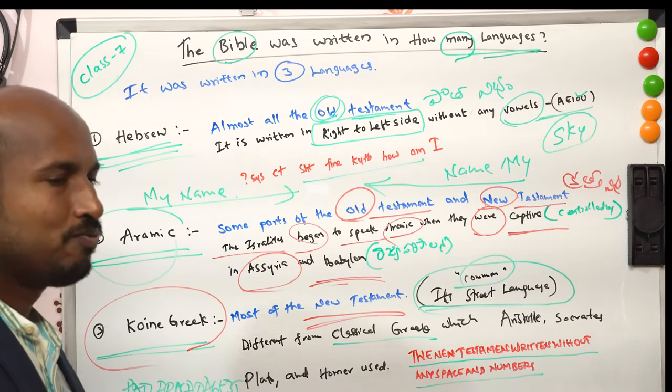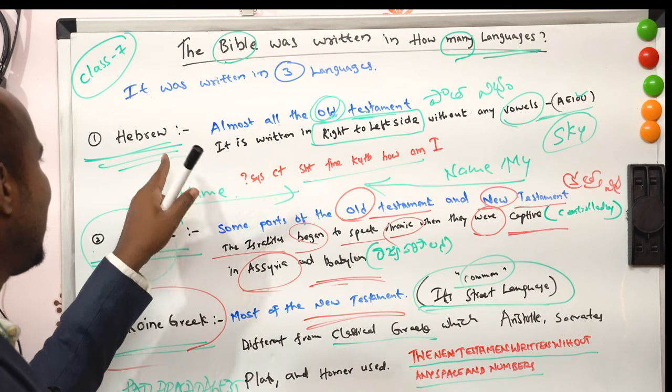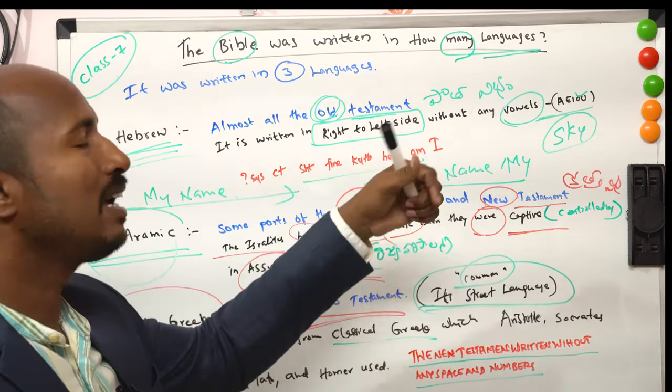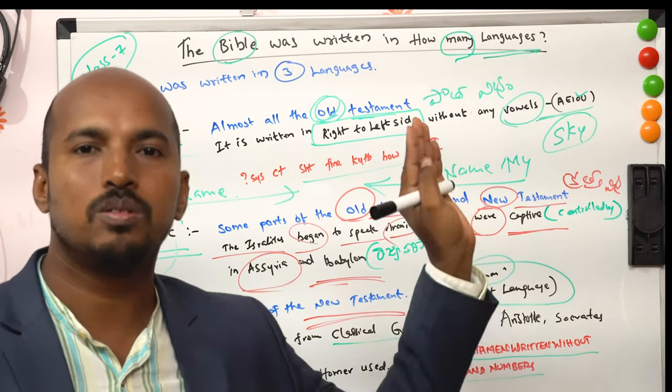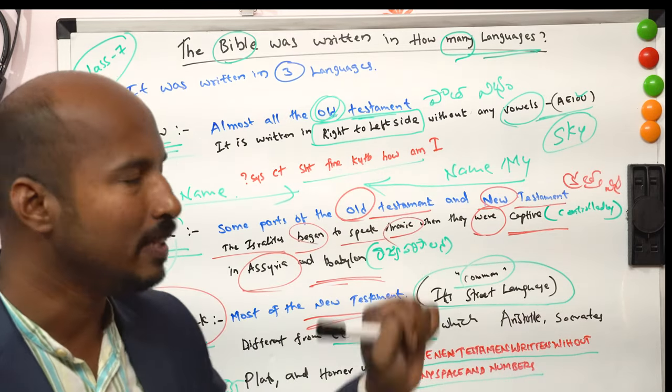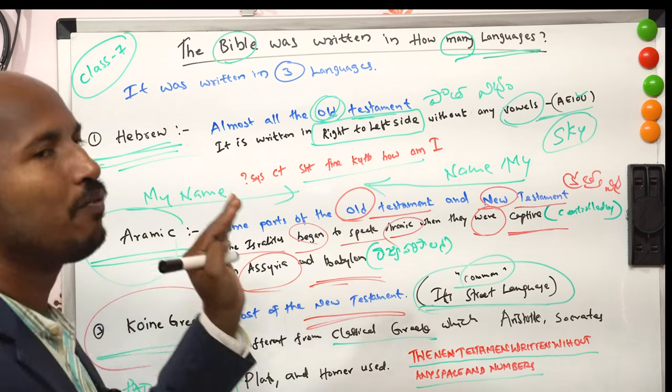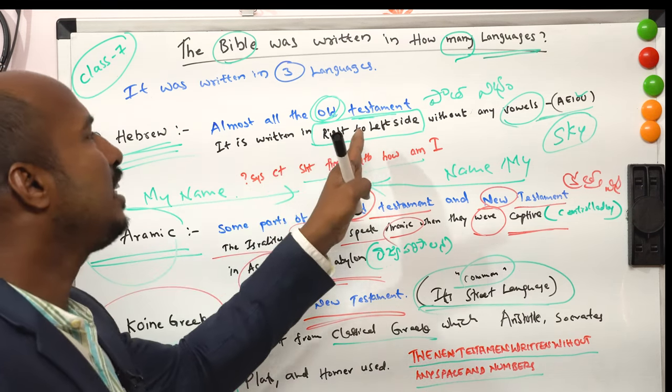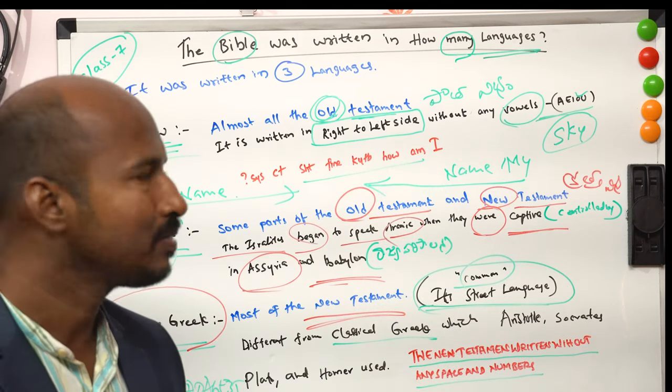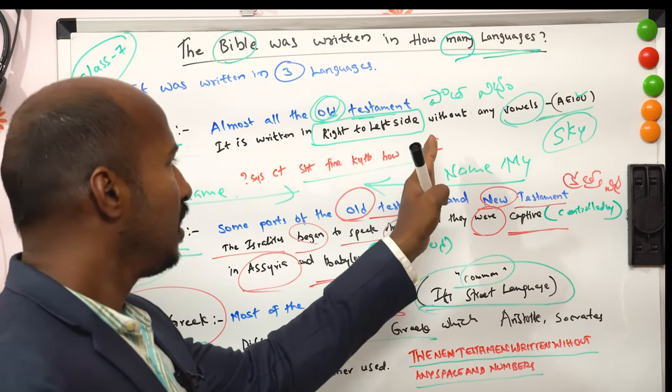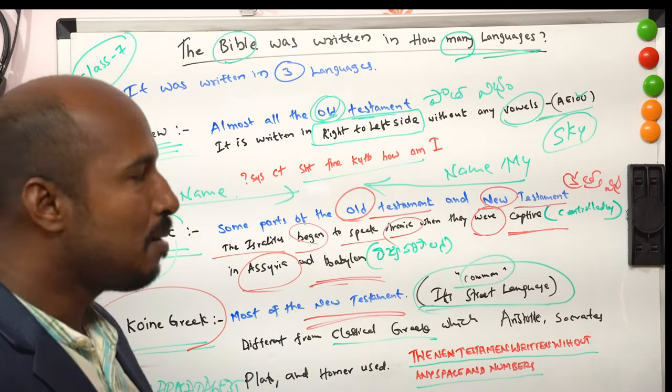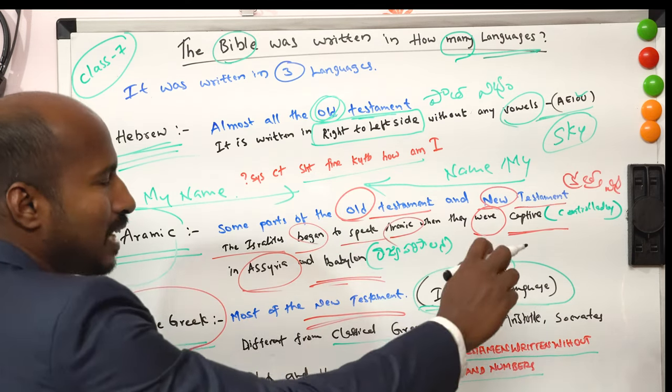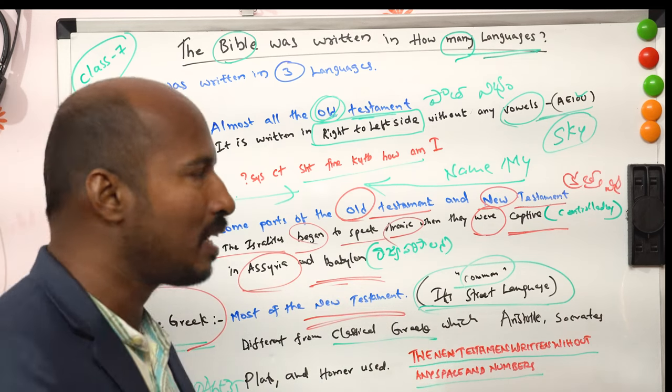Hebrew. First of all, we will see what about Hebrew. Hebrew is almost all the Old Testament. What is the speciality of Hebrew? It is written in right to left. Right to left. If you are on the board, you will not be able to start the Bible here. But in Hebrew, you will not be able to start the Bible here.